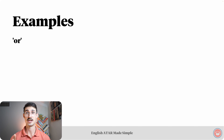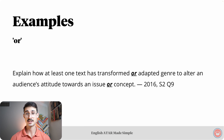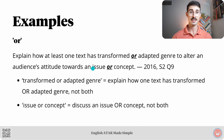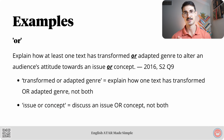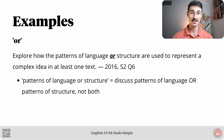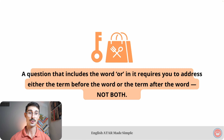Let's look at questions with the word 'or.' 'Explain how at least one text has transformed or adapted genre to alter an audience.' We've got a double whammy here. 'Transformed or adapted genre' means you must explain how one text has transformed or adapted genre — you can't discuss how one text has both transformed and adapted genre. Another example: 'Explore how the patterns of language or structure are used to represent a complex idea in at least one text.' Here, 'language or structure' means you must discuss patterns of language or patterns of structure — not both. Key takeaway: a question that includes the word 'or' requires you to address the term before 'or' or the term after 'or' — not both.